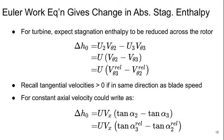Keep in mind, remember that the tangential velocities are positive if they're in the same direction as the blade speed, so if we assume our axial velocity is constant, we could pull that out and say that delta h0 is u times vx